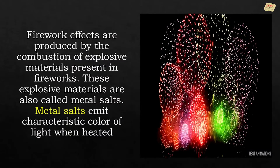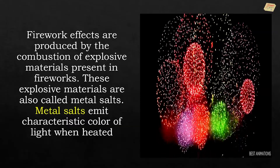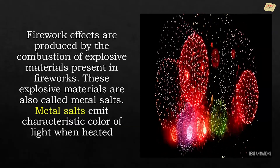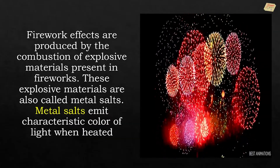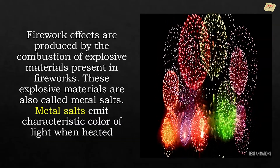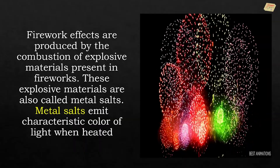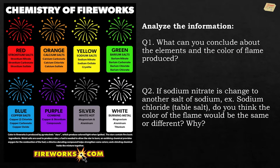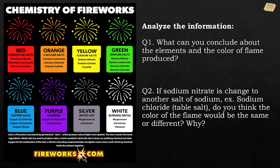Fireworks effects are produced by the combustion of explosive materials present in fireworks. These explosive materials are also called metal salts. Metal salts emit a characteristic color of light when heated. For example: red is produced when strontium salt is present, orange is produced when calcium salt is present, and yellow can be seen if sodium salt is present.